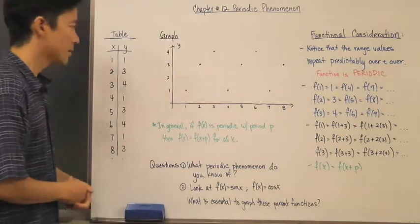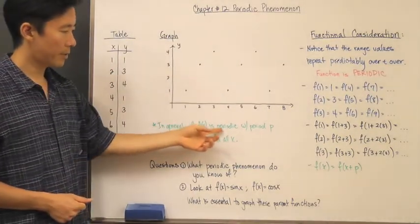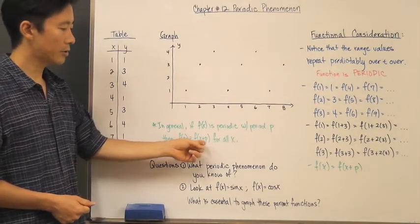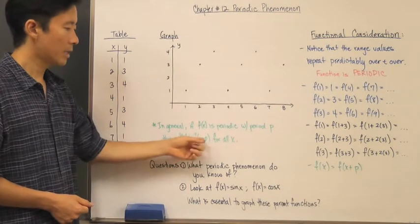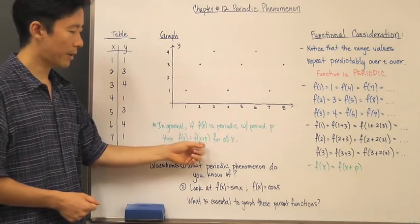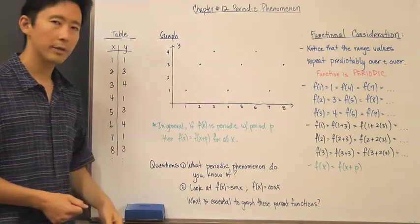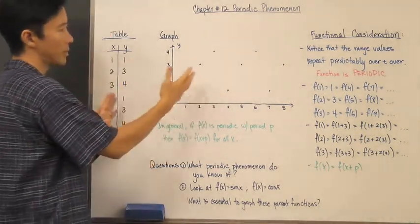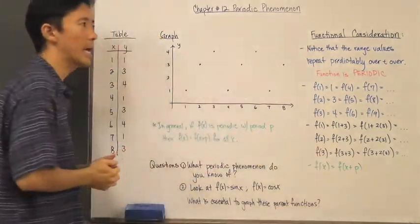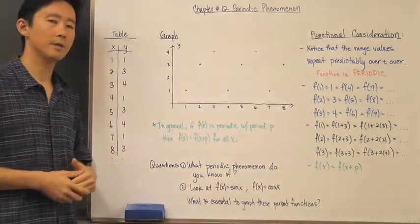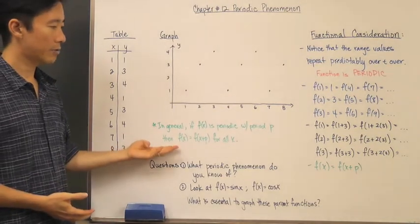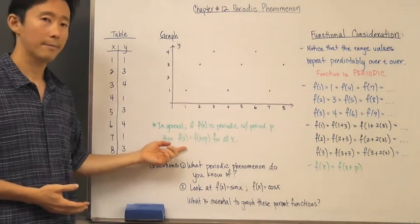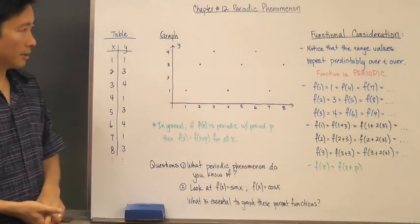So in general, if f(x) is periodic with period p, we can always say that the functional values will be the same if we add that period value to x and evaluate the function at that point. Based on our table, our graph, and how we want to represent the pattern using functional notation, we can now mathematically describe a periodic function with period p.